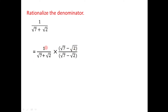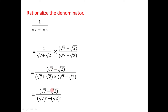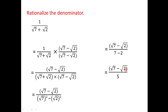Multiplying the numerator gives 1 × (√7 − √2) = √7 − √2. The denominator is (√7 + √2)(√7 − √2), which is again in the form (a + b)(a − b) = a² − b². So the denominator becomes (√7)² − (√2)² = 7 − 2 = 5. Therefore we get (√7 − √2)/5.